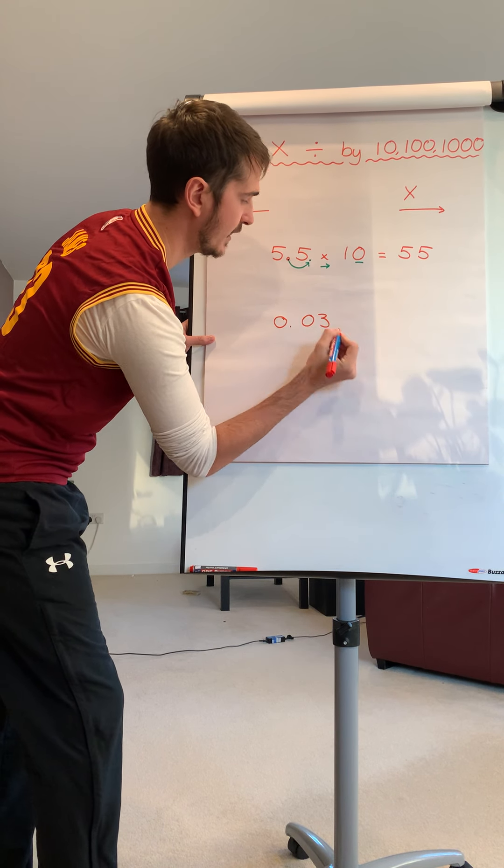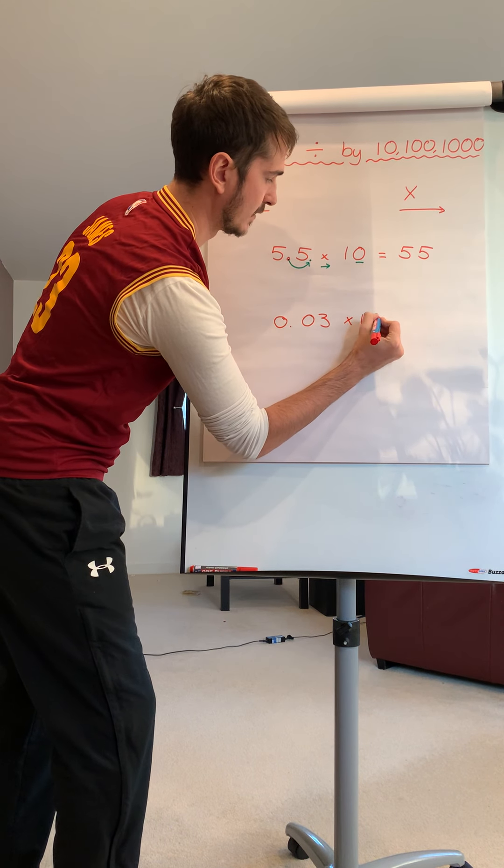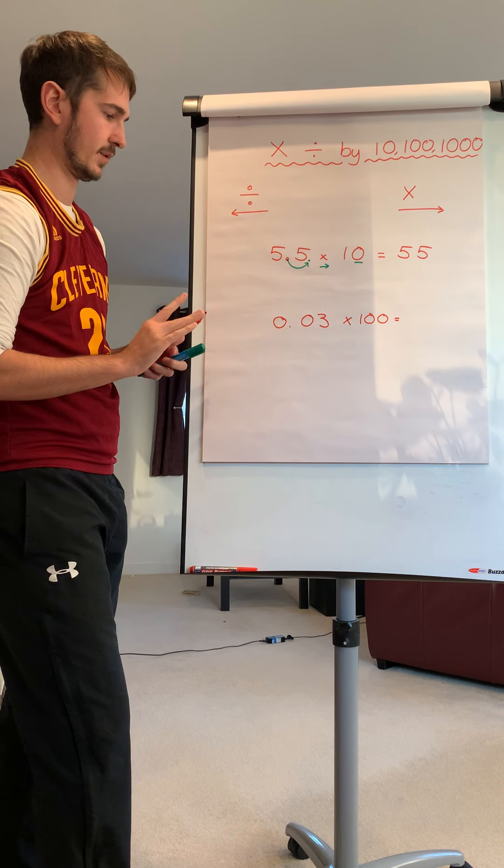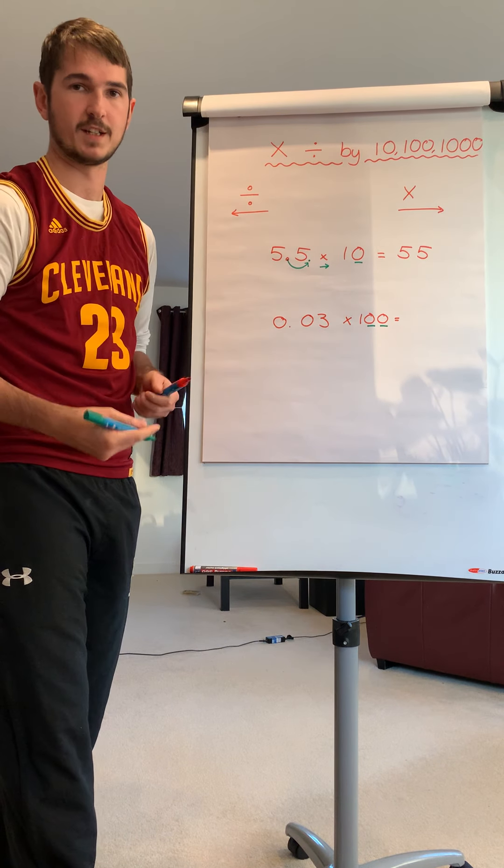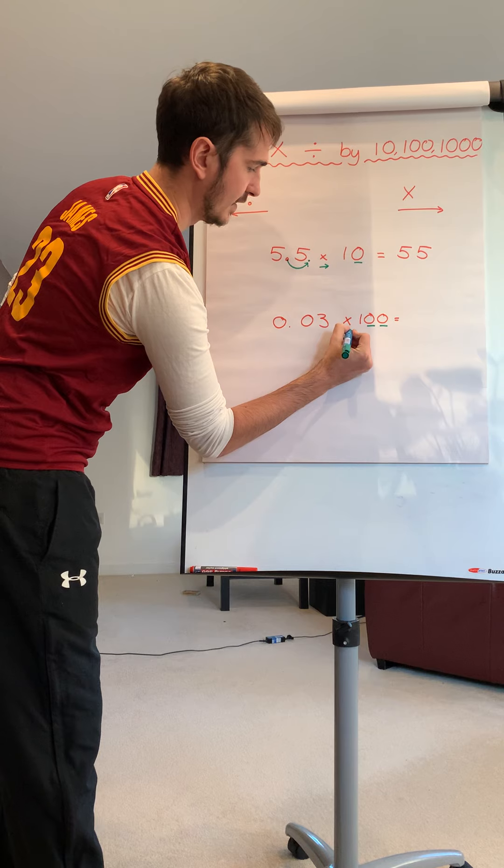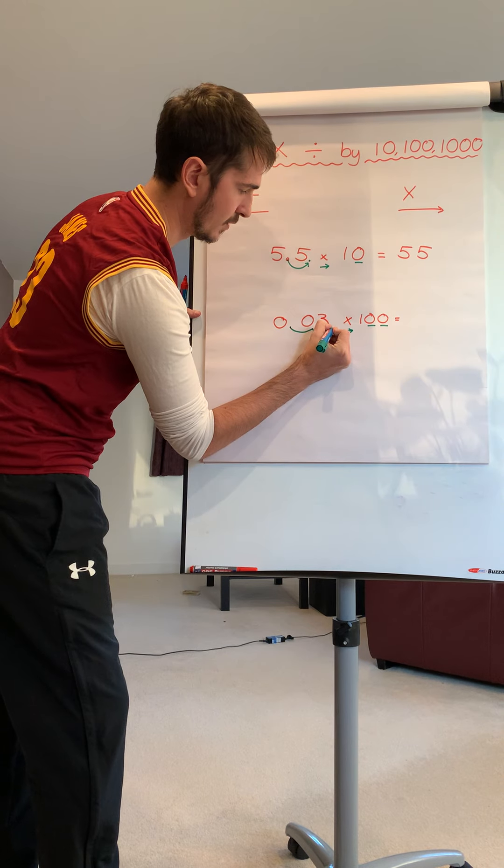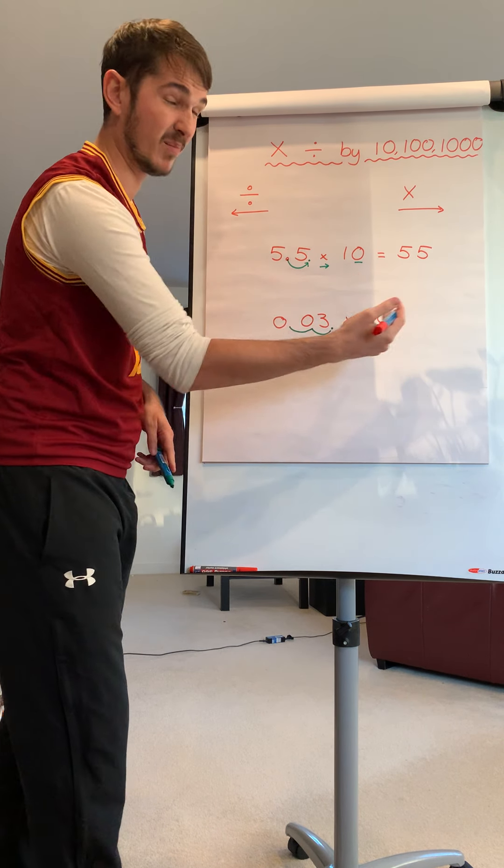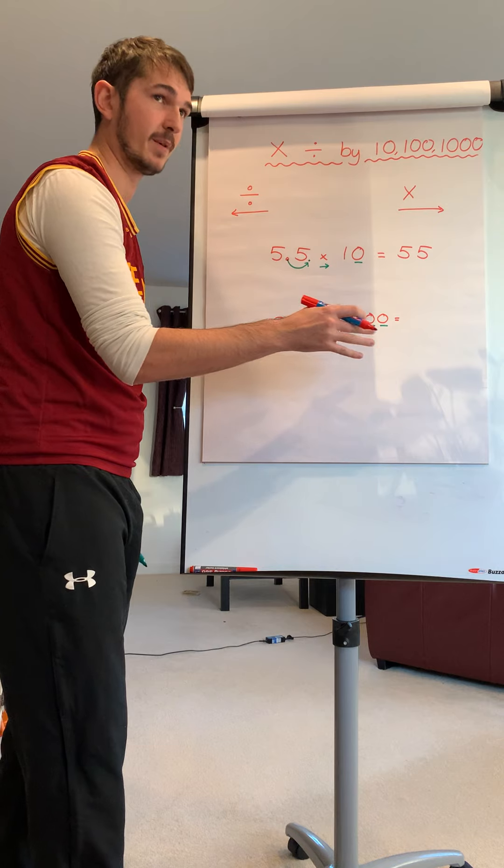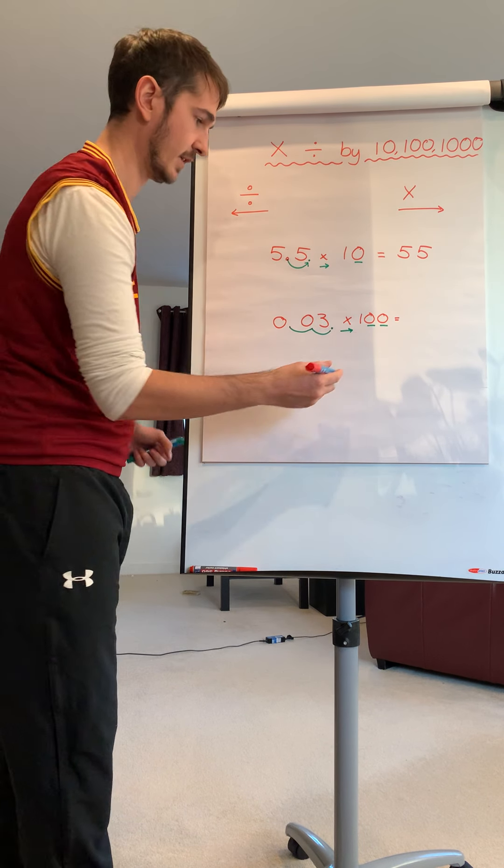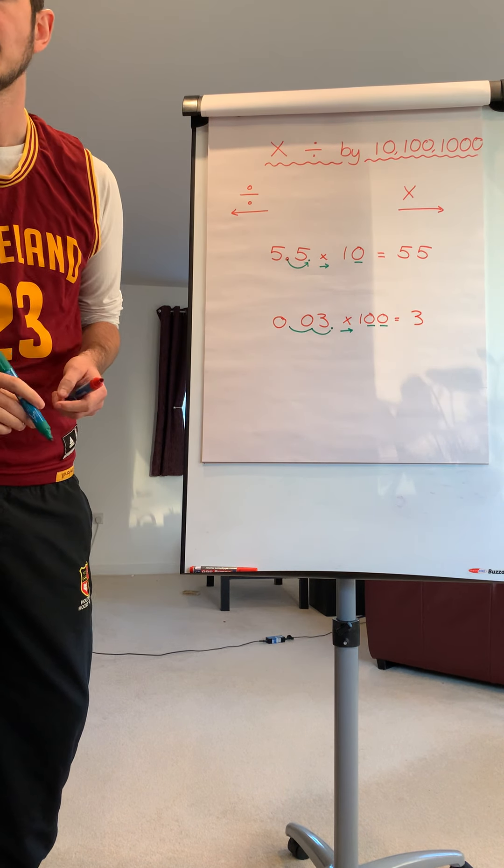I've got 0.03, and this time I'm going to times by 100. Remember, I'm going to move my decimal place twice, and again it's times so it's to the right. So one, two, new decimal point. Remember, I'm not going to put 3.0, but I'm also not going to put 003, because that means I've got zero in the hundreds column and zero in the tens column. So I don't need to put that, so my answer is just going to be 3.